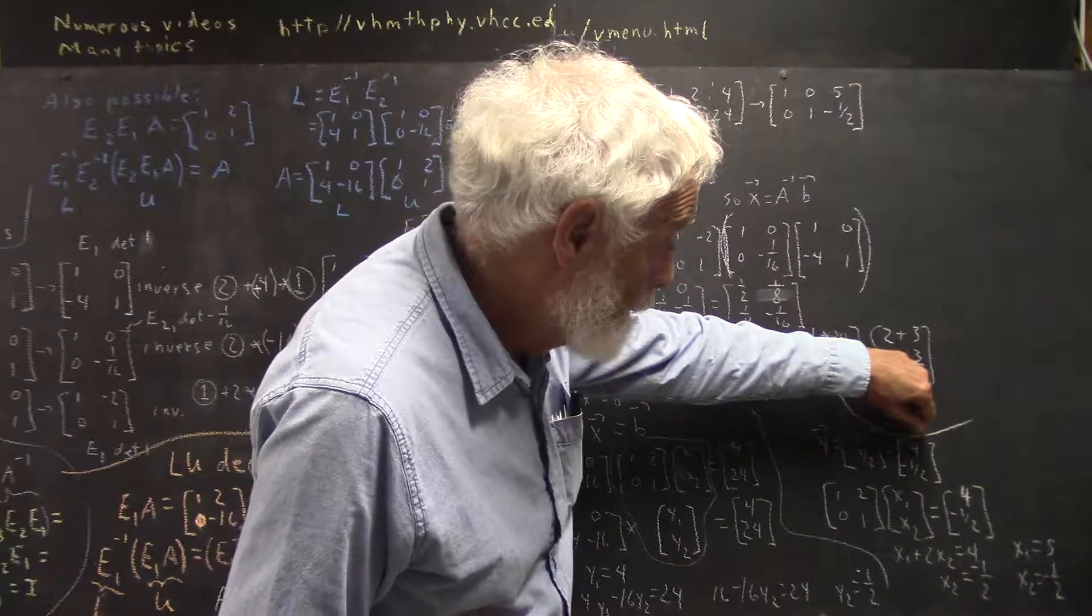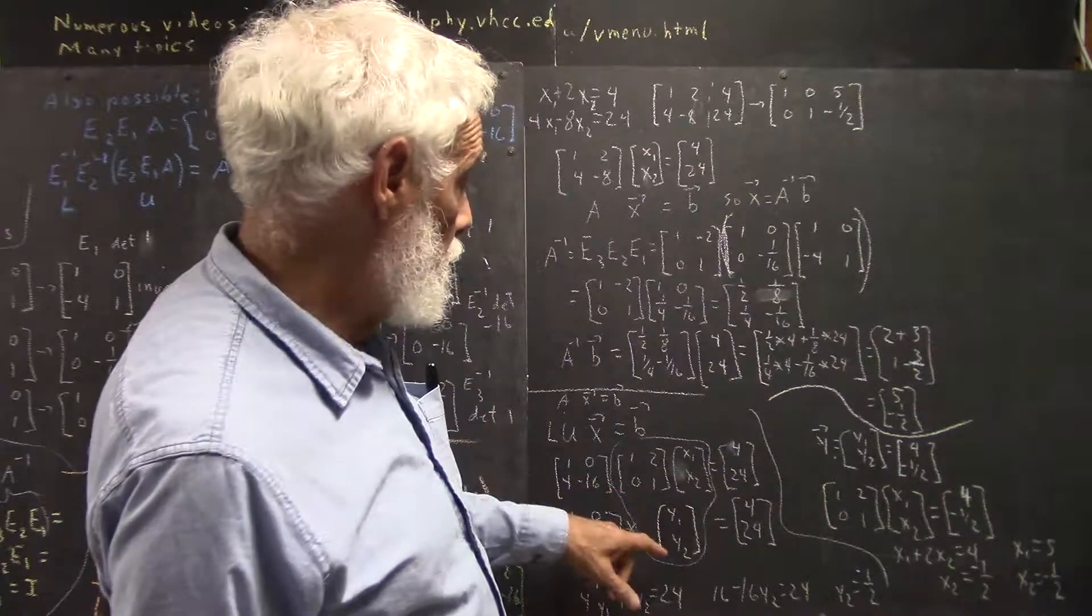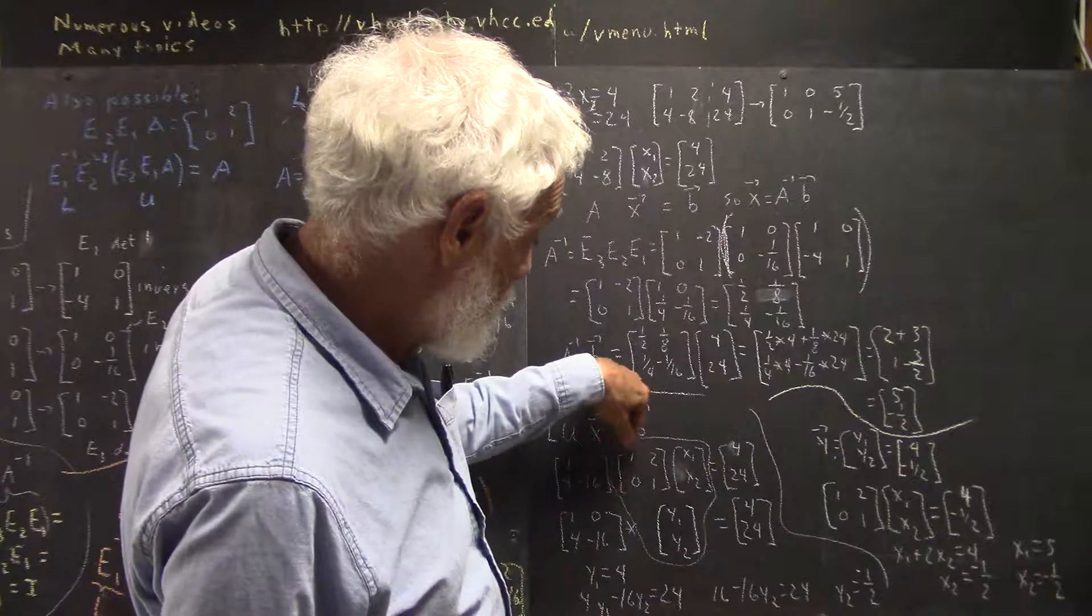So, Y2 is negative 1 half. And now, we know that our solution for Y is Y1, Y2 equals 4, negative 1 half.